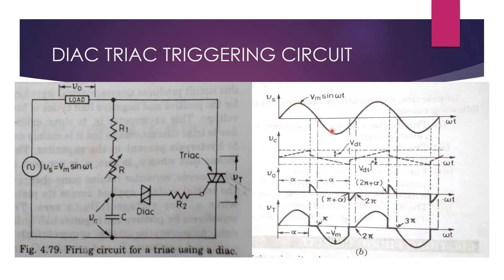Vs shows the source voltage, Vc shows the capacitor voltage. During the positive half cycle, the capacitor charges through resistances R and R1. The capacitor charges up to DIAC trigger voltage VdT as shown over here.